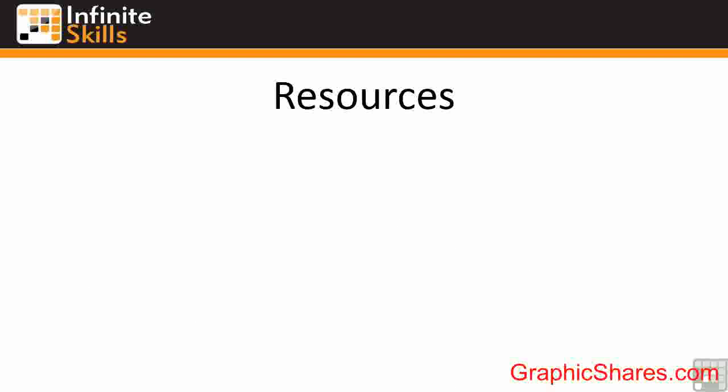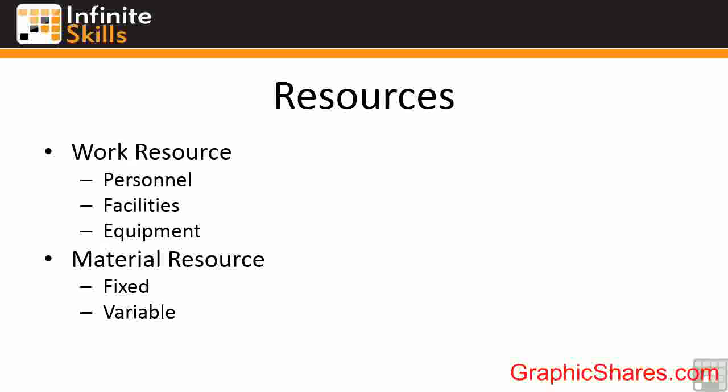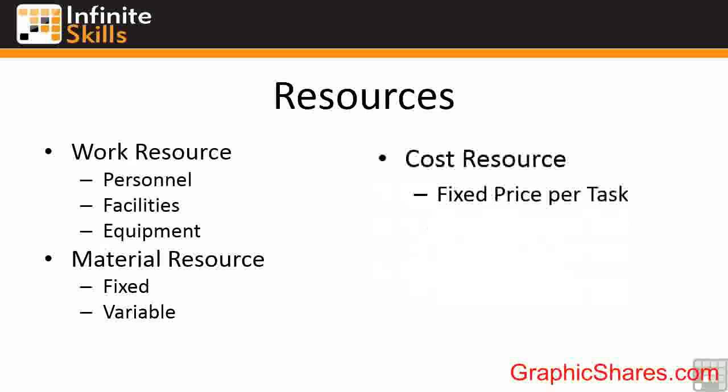We then need to look at resourcing all your tasks. Resources are broken down into work resources, which can include personnel, facilities, and equipment — anything that uses money on a time basis. There are material resources, which can be fixed or variable, and effectively use money on a per item basis. And then there is a third type: cost resource, which has a price per task that can differ for each task. It's not set per time unit or per physical unit — it's just a cost per task that you can attach to build up the costs for the whole project.